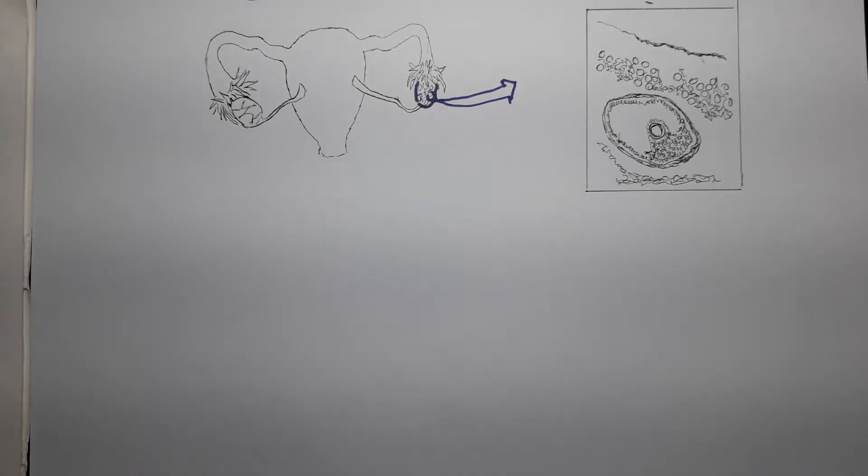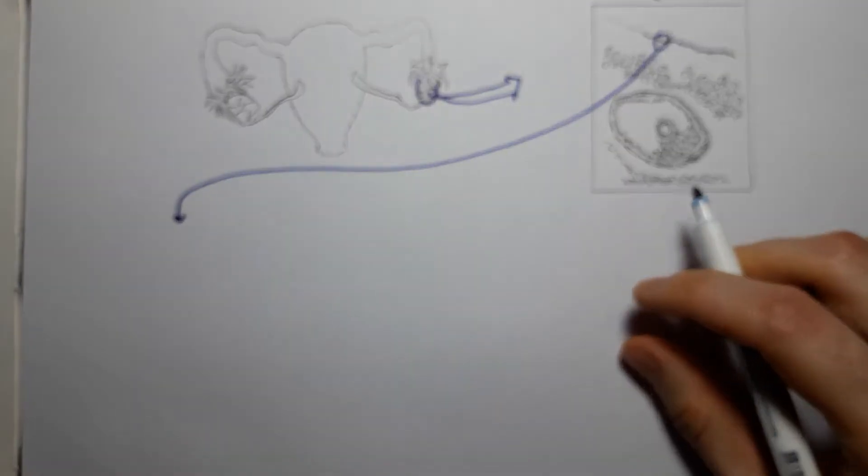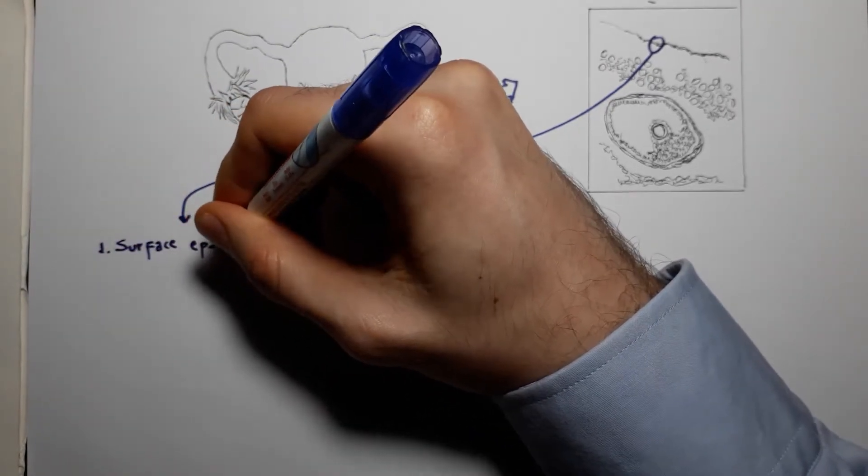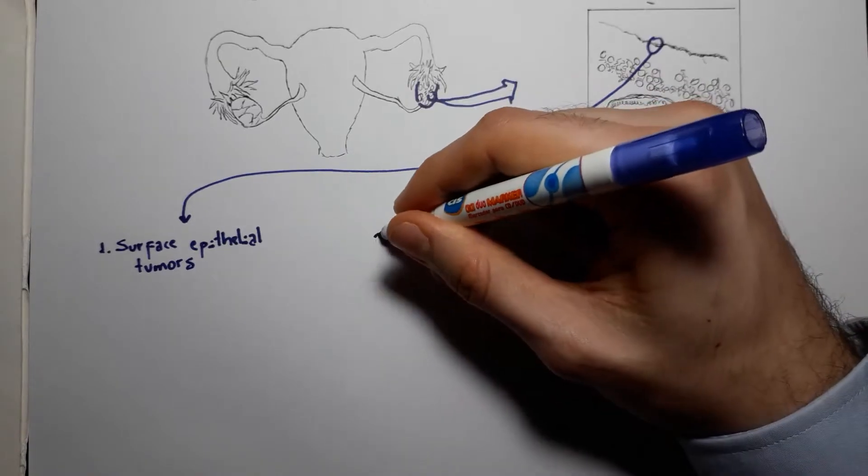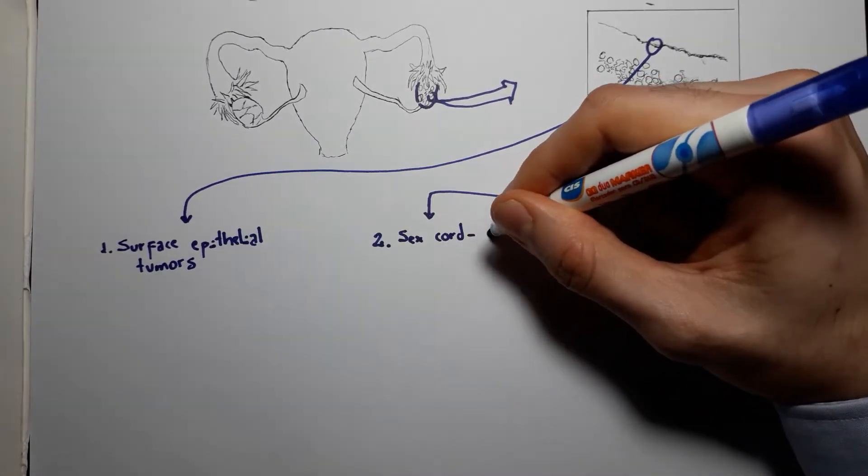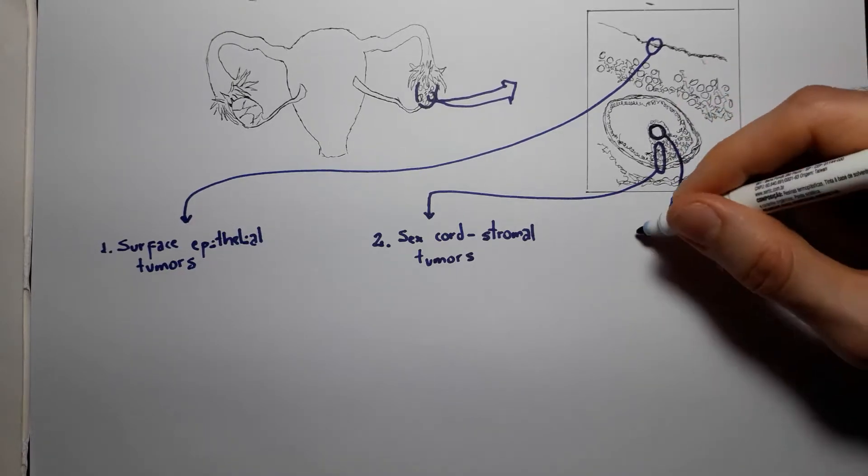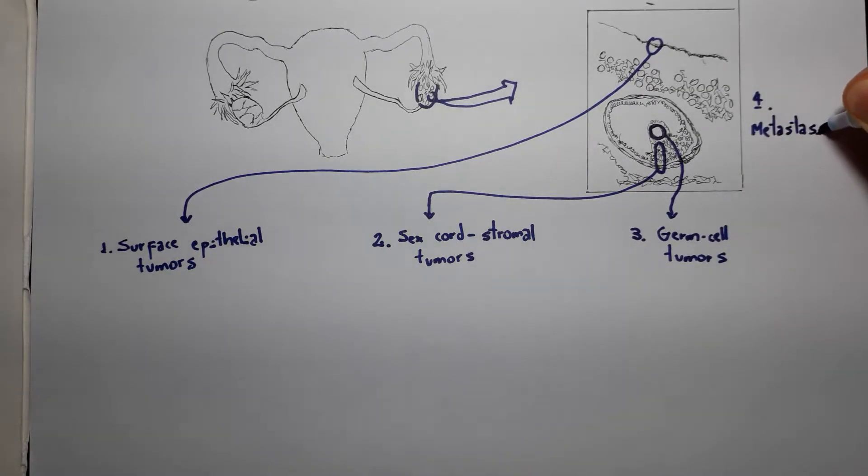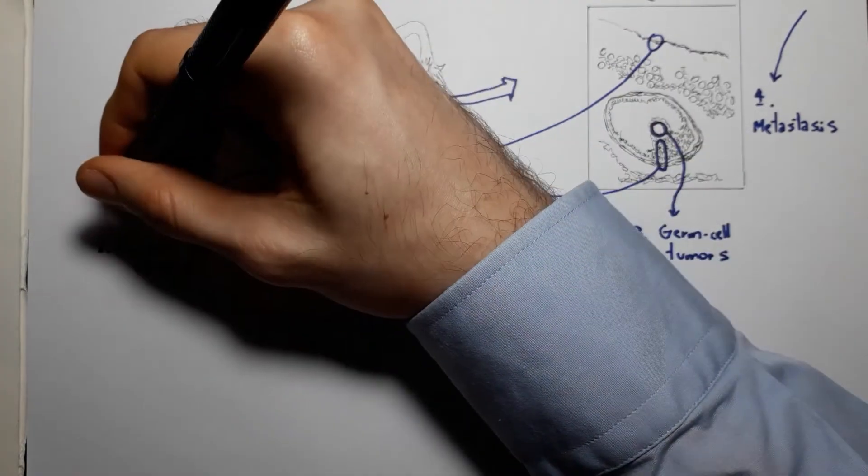Ovarian tumors can arise from four different origins: three local or metastases, which have profoundly different presentations. We can have tumors arising from the surface of the ovary, generating surface epithelial tumors; from the granulosa and theca cells, generating sex cord stromal tumors; from the oocyte or egg itself, generating germ cell tumors; or metastases to the ovaries. These are the four main groups of ovarian cancers according to their cell of origin.